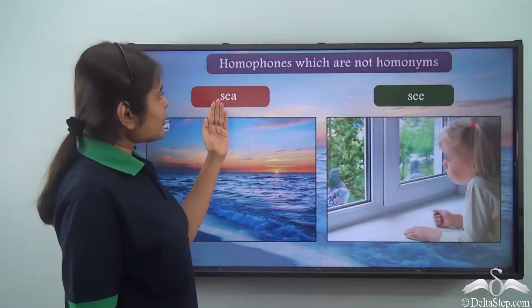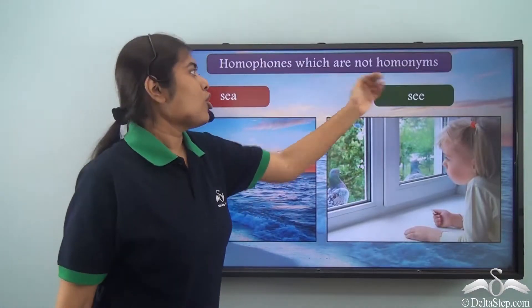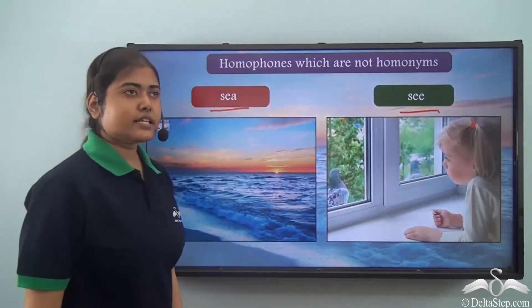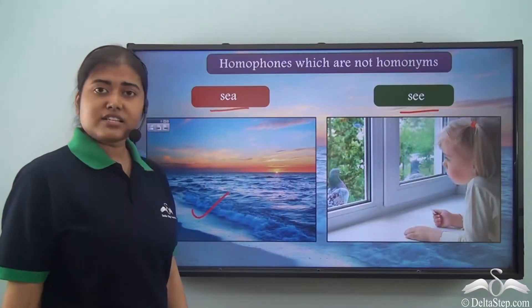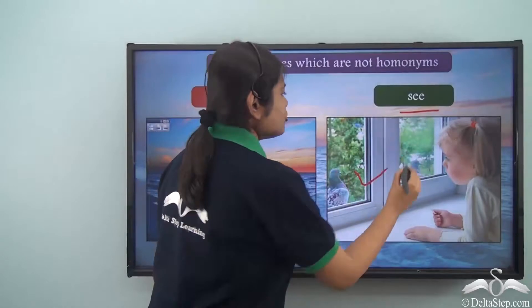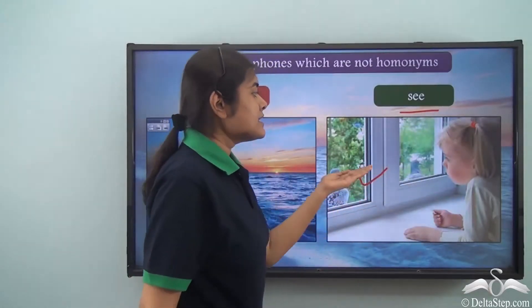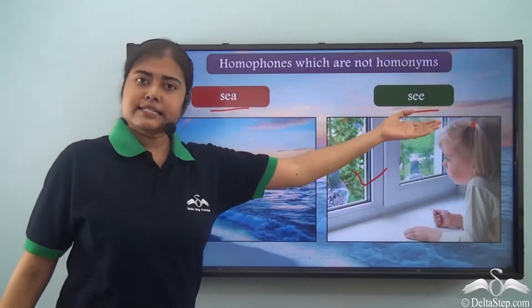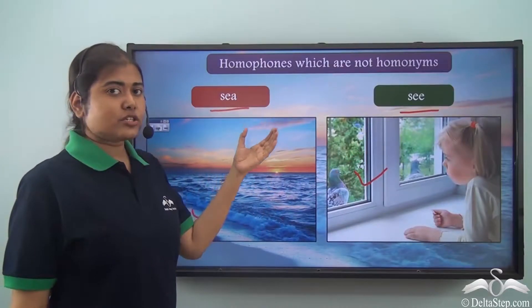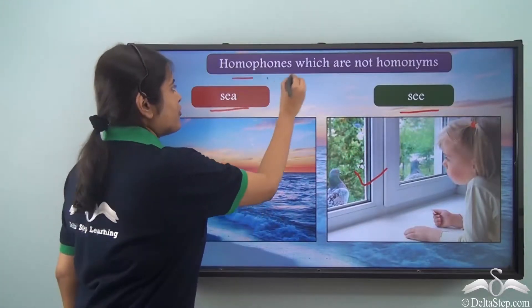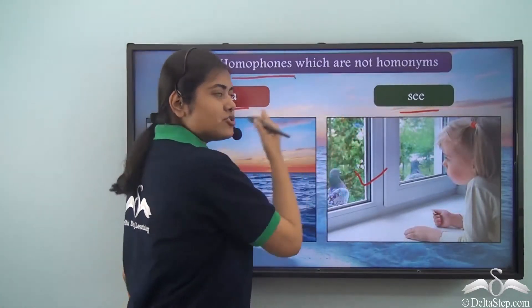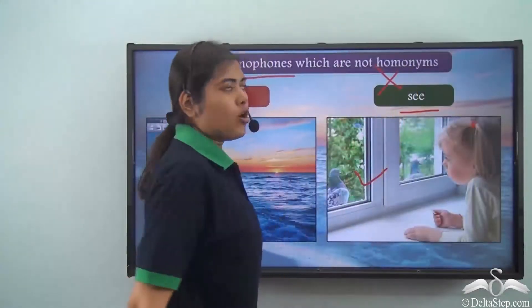Now let us look at homophones which are not homonyms. Here we have 'sea' and 'see'. This 'sea' refers to the vast water body whereas 'see' refers to seeing something, as in to watch — you can see this girl is looking at something. So 'sea' and 'see' have the same pronunciation and hence they are homophones, but they do not have the same spelling, so they are not homonyms.